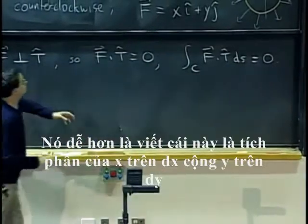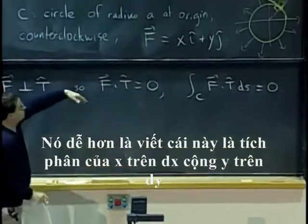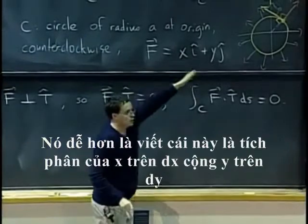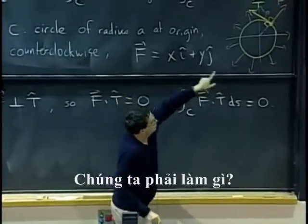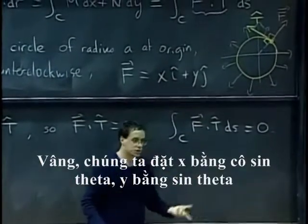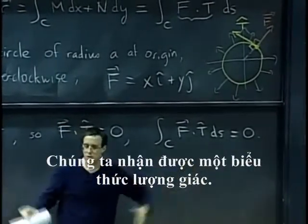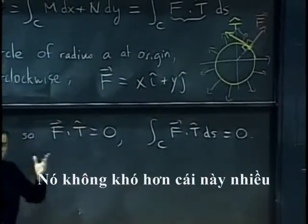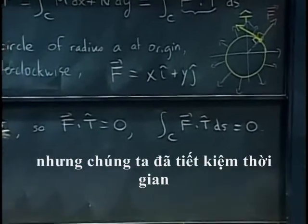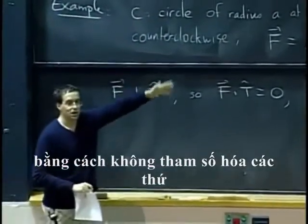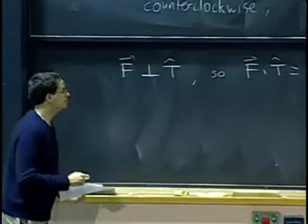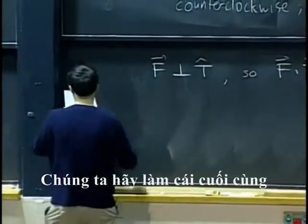That is much easier than writing, well, this is integral of x dx plus y dy. What do we do? We probably set x equals a cosine theta, y equals a sine theta. We get a bunch of trig things. Oh, it cancels out to zero. It is not much harder, but we saved time by not even thinking about how to parameterize things.